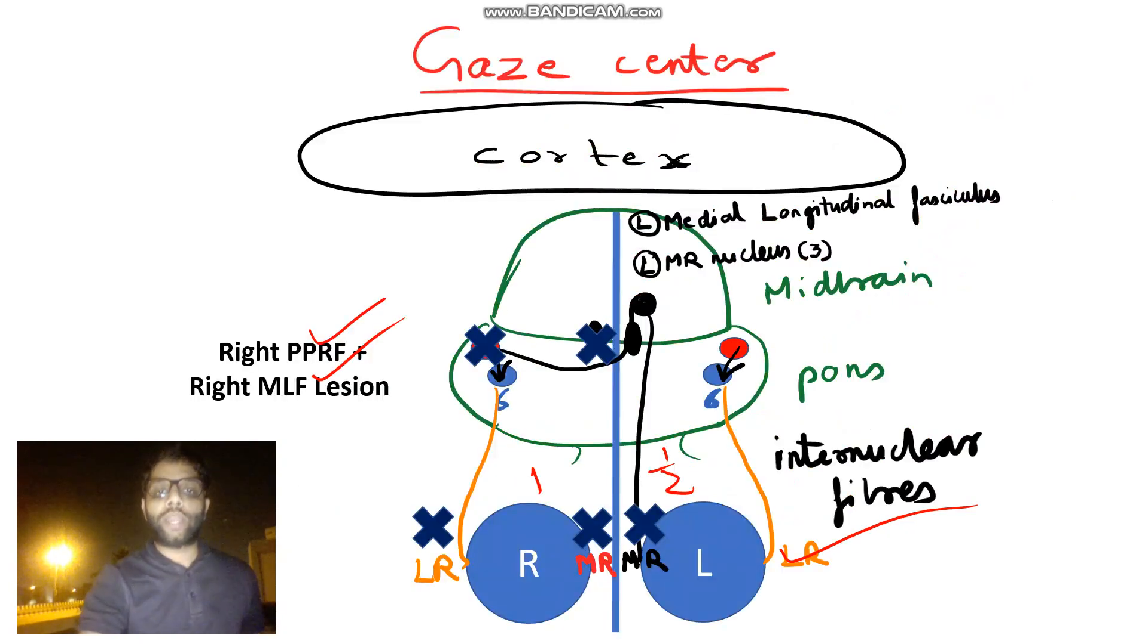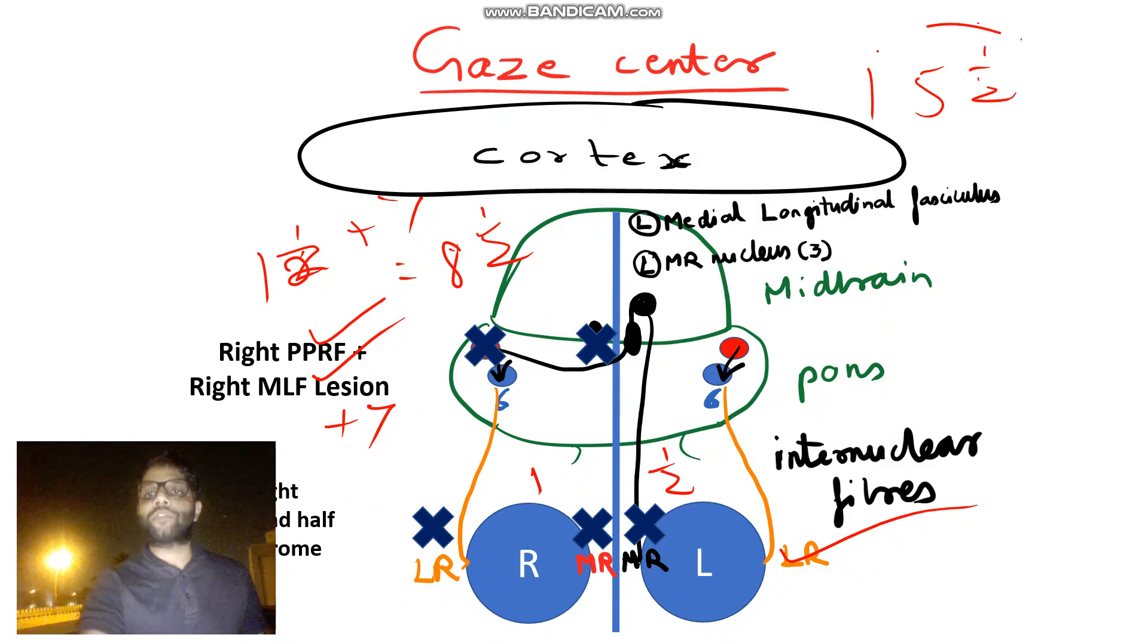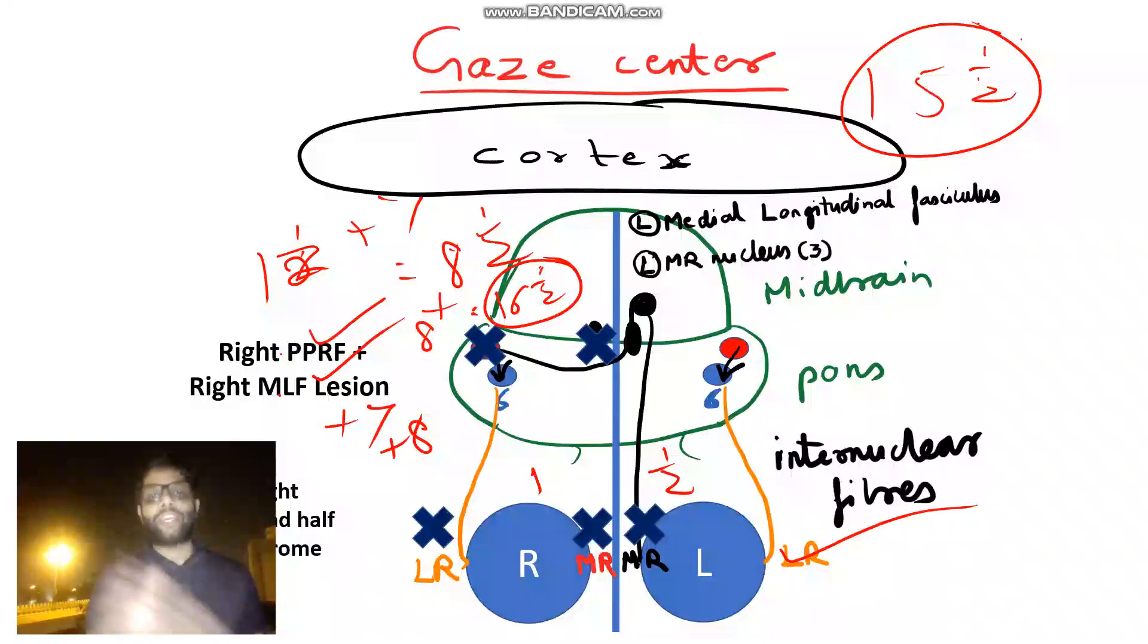One step further, if along with PPRF plus MLF, 7th nerve is also destroyed. So math summary, right? So 1.5 plus 7, how much is 8.5 syndrome? Okay. How will you come to this 15.5 syndrome? Bilateral 7th nerve palsy plus one side, 1.5 is 15.5. And math summary is more than that. So 8.5 is PPRF plus MLF plus 7th. If 8th nerve is also involved, so 8 plus 8, 16.5. But I think for your PG exam level, only until 1.5 is okay for you.